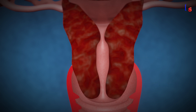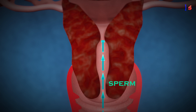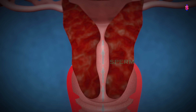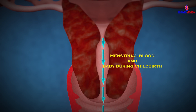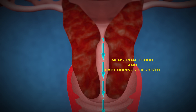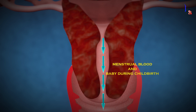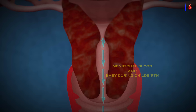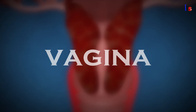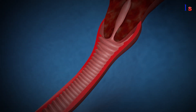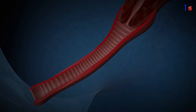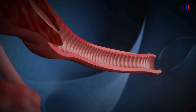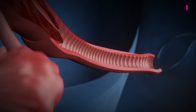The cervix acts as a gateway, allowing sperm to enter the uterus during intercourse and providing an exit for menstrual blood and a baby during childbirth.